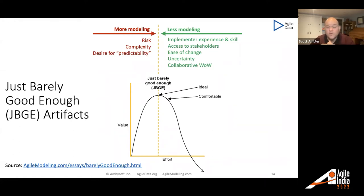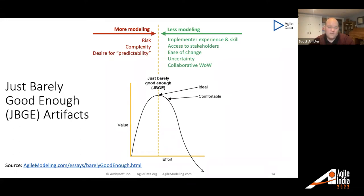If it's easy to change — if I know how to refactor my databases — there's less need to think everything through up front. This is one reason why traditionalists think they need to model everything to the nth degree at the start of a project: because they don't know how to evolve a database effectively. They believe it's hard, which is completely false — I'll talk about that later. If there's great uncertainty, I want to do less modeling because it's going to change anyway. You can download these slides from the Agile India site or on SlideShare.